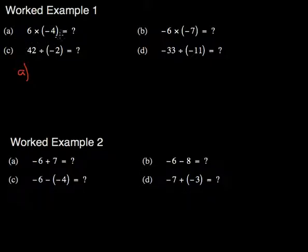What I look at here is how many negatives there are. If it's an even number of negatives, my answer will be positive. If there's an odd number of negatives, my answer will be negative. Because I only have one negative here, my answer will be negative, and then I'm left with 6 times 4, which is 24.